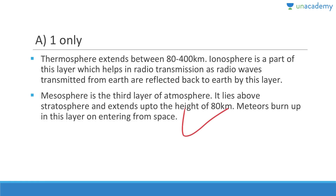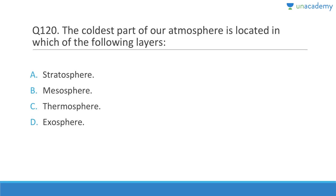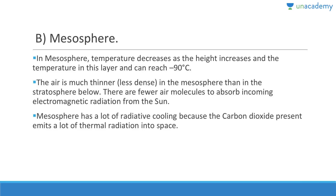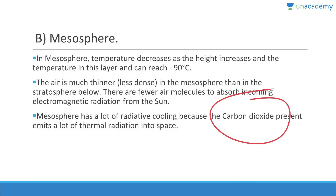The coldest part of the atmosphere is in the mesosphere. Temperature decreases through the troposphere reaching minimum at the tropopause, then increases in the stratosphere, then declines again in the mesosphere — reaching the lowest temperature at the top of the mesosphere, which can reach minus 90 degrees Celsius. There are fewer air molecules in the mesosphere, and CO2 here emits a lot of thermal radiation into space.